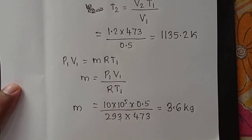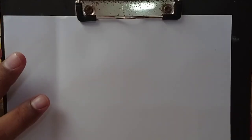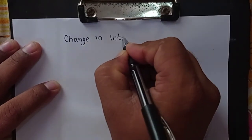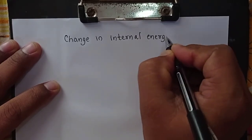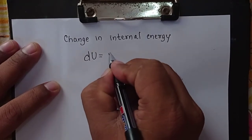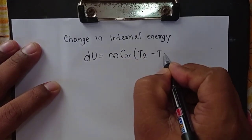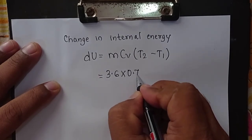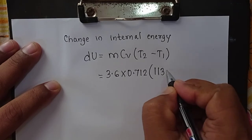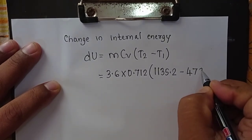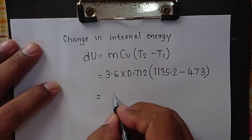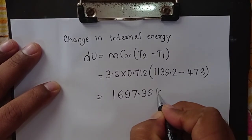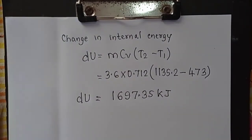Now find the change in internal energy. dU equals m·cv·(T2 minus T1), where m is 3.6 kg, cv is 0.712 kilojoules per kg kelvin, T2 is 1135.2 kelvin, and T1 is 473 kelvin. Substituting these values, we get dU equal to 1697.35 kilojoules.